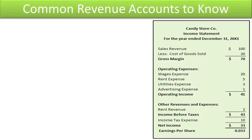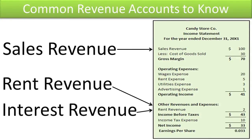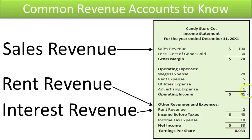Here are the common revenue accounts you should know: sales revenue, rent revenue, and interest revenue. Sales revenue is part of a company's core operations and is used to compute gross margin. Rent revenue and interest revenue are considered below-the-line items because they are not normally part of a company's core operations. However, if this were the income statement of a landlord, rent revenue would appear above the line; if this were a bank, interest revenue would also be above the line. When revenues are not part of core operations, they appear in other revenues. You should recognize that they are all revenues added to arrive at net income.